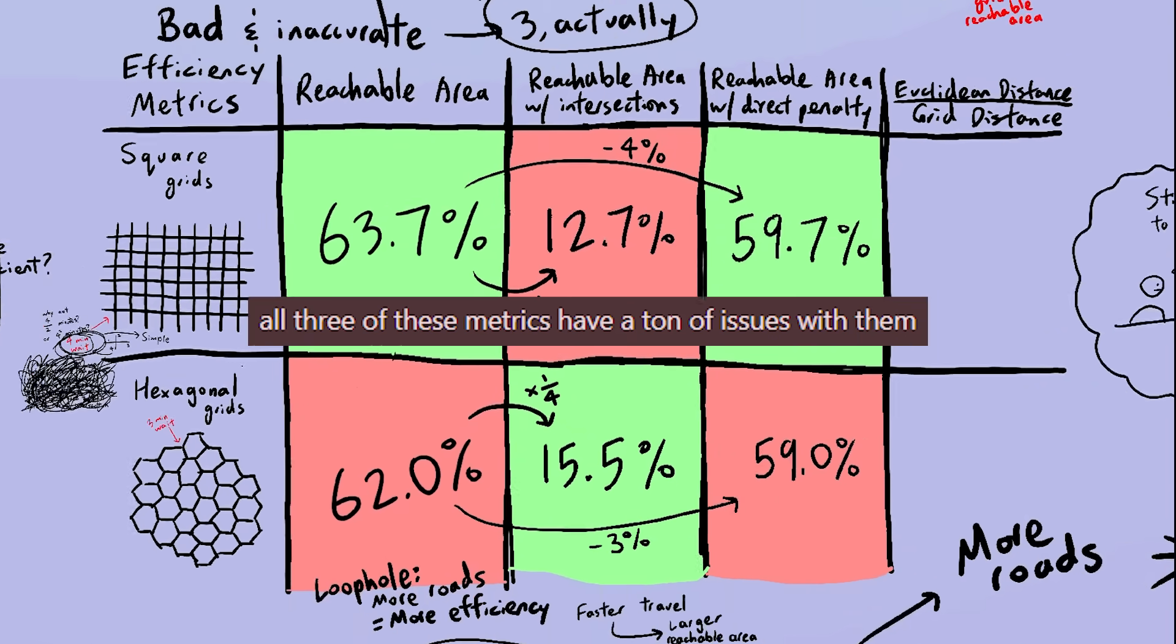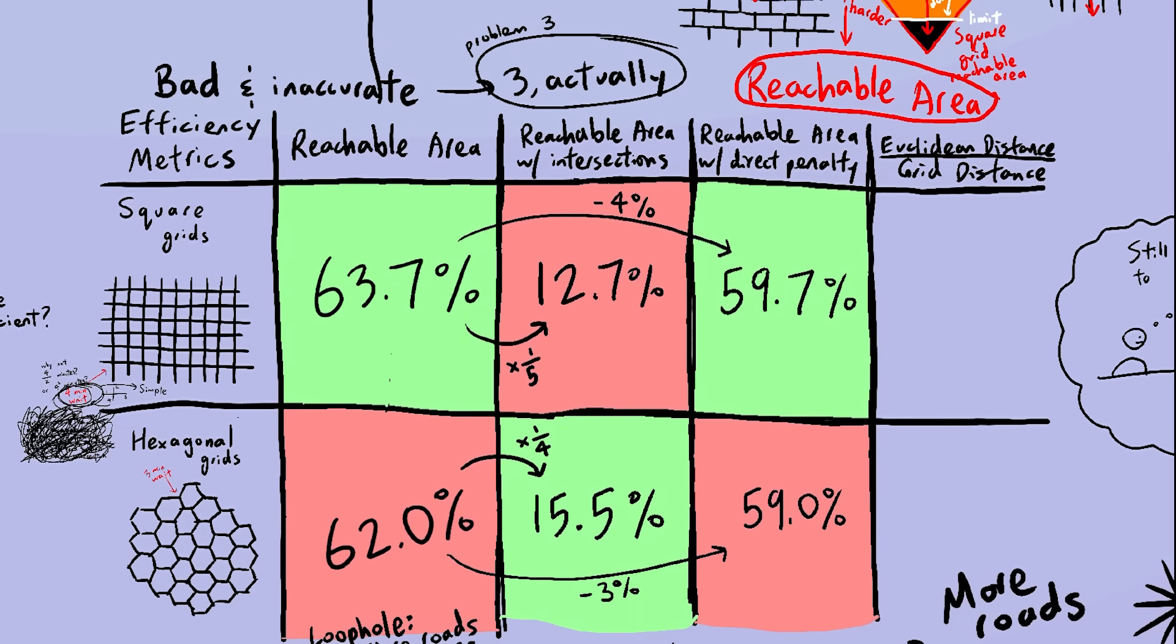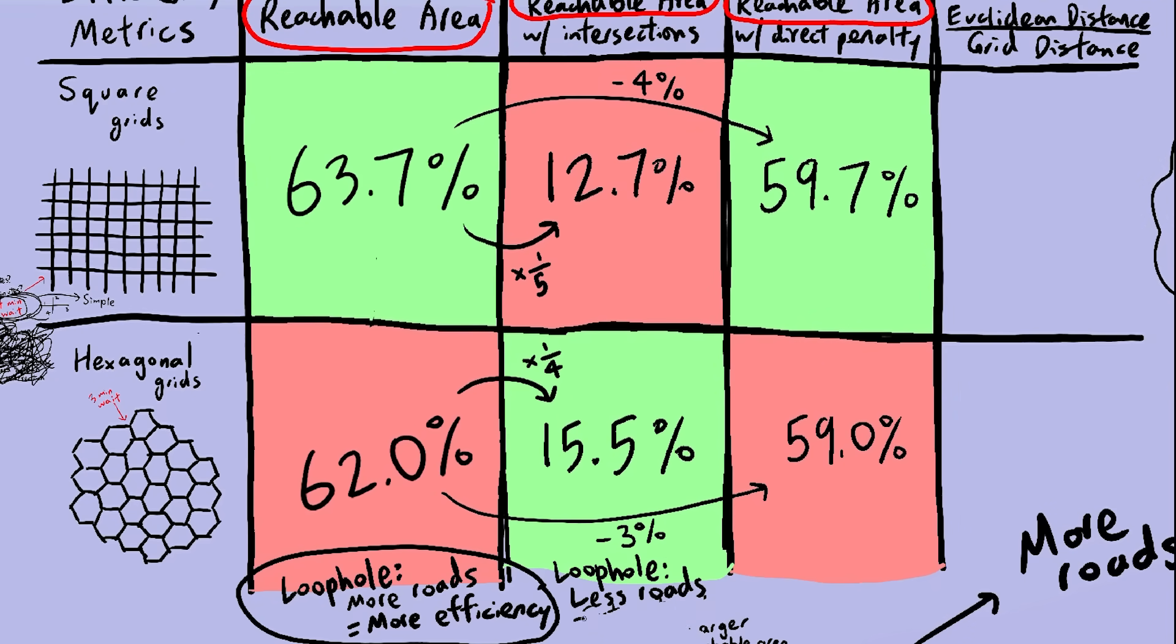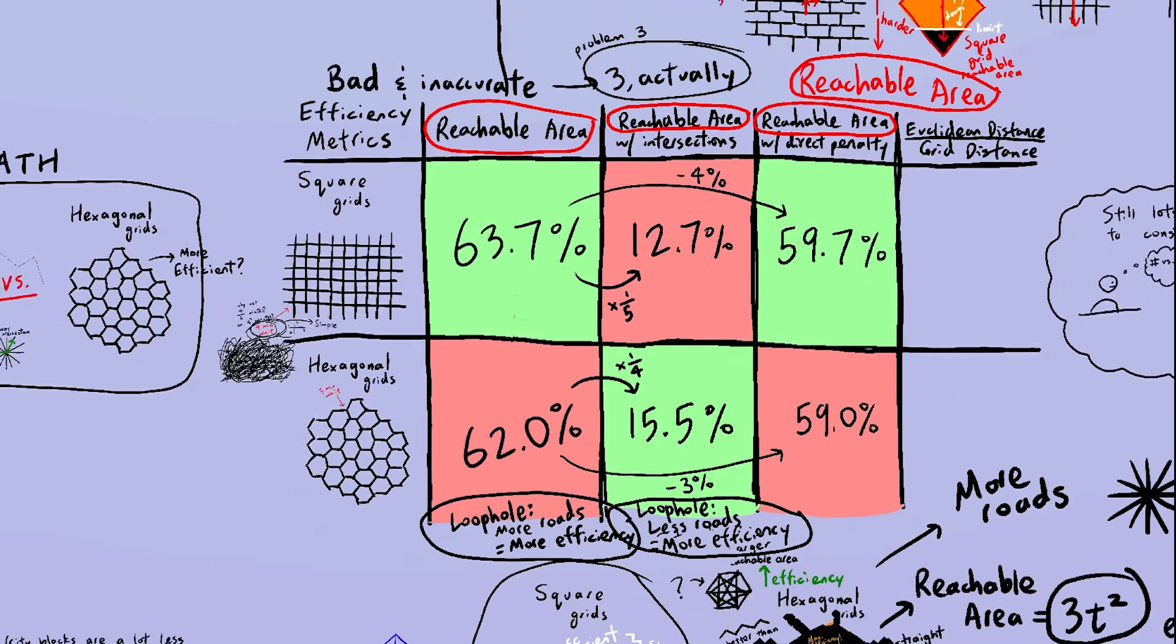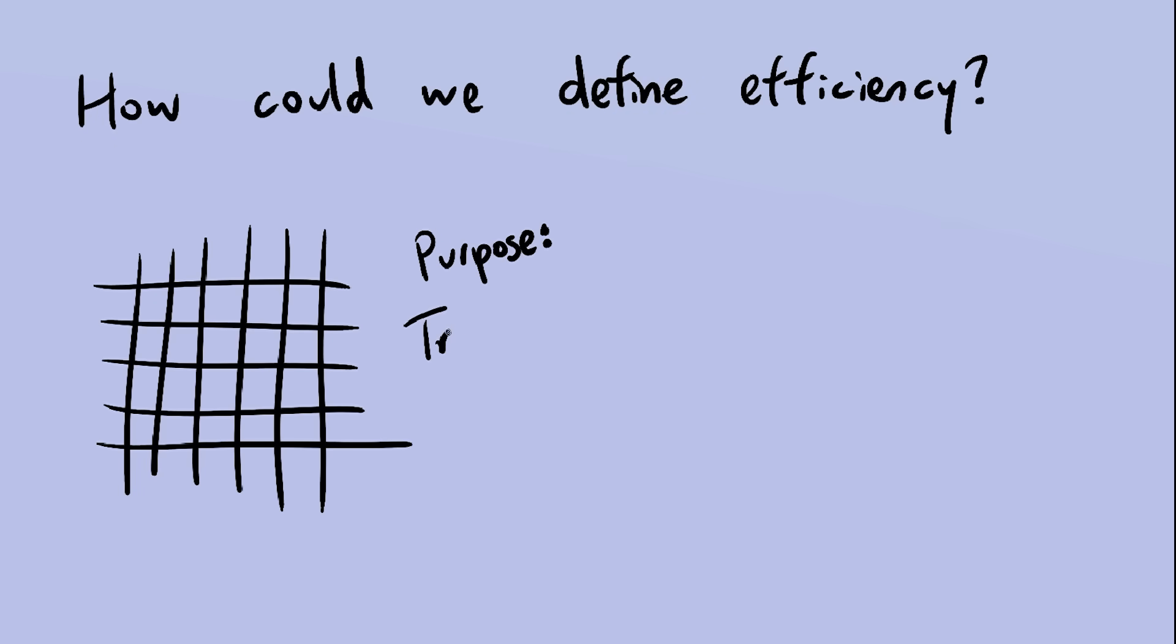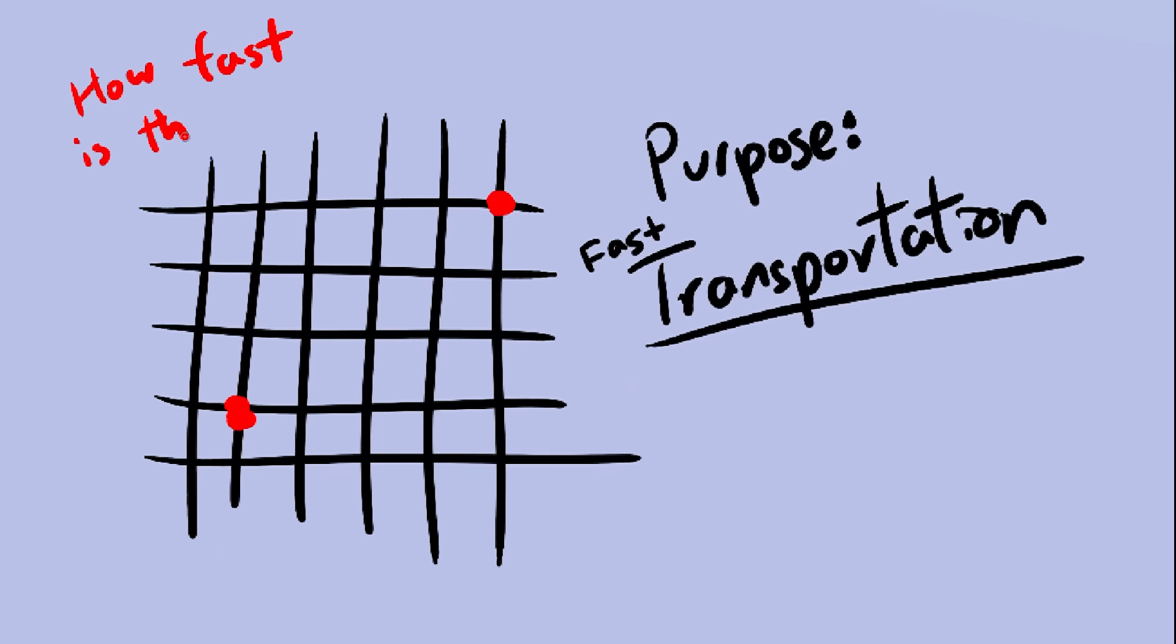It's been 10 minutes already, and we still haven't figured anything out. Maybe the problem has been reachable areas. This whole time, our definition of efficiency has been, how large is the reachable area? Maybe that's why we're having so many problems. So let's start at the very beginning and find another definition of efficiency. The point of all these road grids is to get places preferably quickly. So we could define efficiency based on how quickly you can travel between two points.